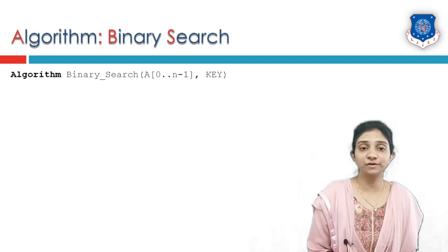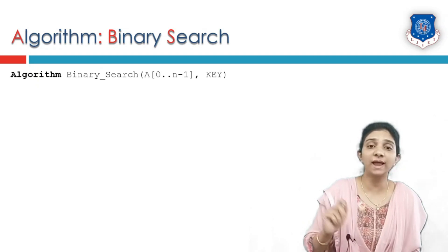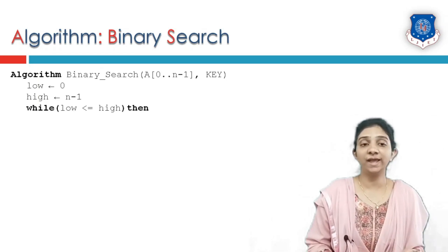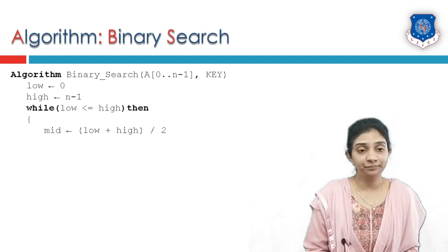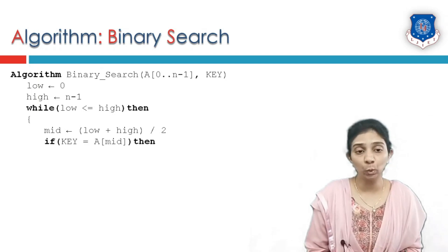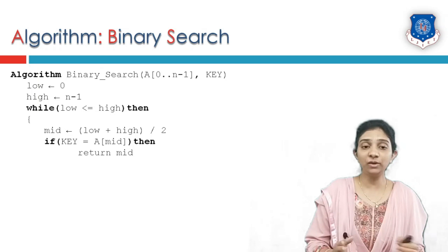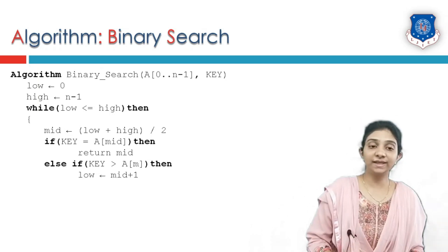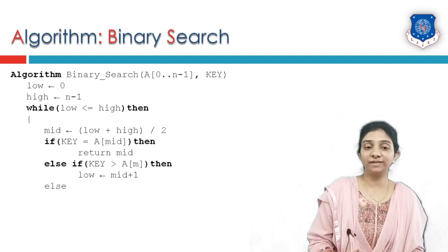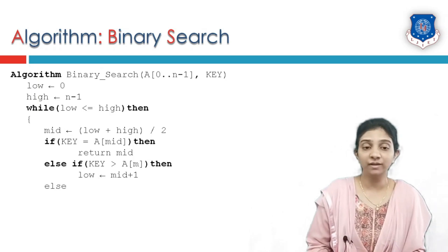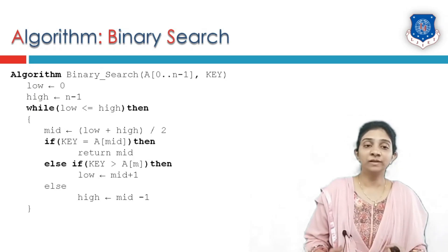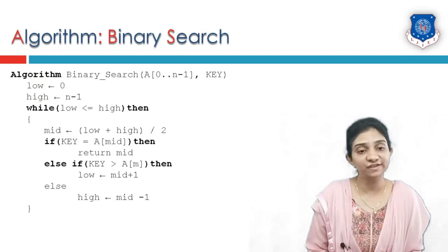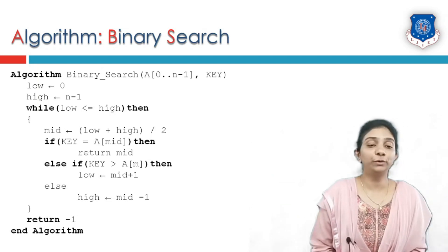The binary search algorithm takes two inputs: an array of elements from index 0 to n−1, and a key element. Low is initially 0 and high is initially n−1. While low is less than or equal to high, we continue searching. First, calculate mid as (low + high) / 2. If key equals mid element, return mid. If key is greater than mid element, set low to mid + 1. Otherwise, key is lesser than mid, so set high to mid − 1. This loop continues until the while condition becomes false or the return statement executes. If the element is not found, the algorithm returns −1.